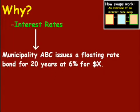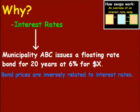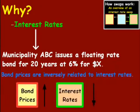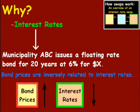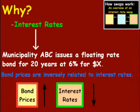They're going to issue a floating rate bond for 20 years at 6%, for X dollars — it could be $100 million or $10 million. If you'll remember, bond prices are inversely related to interest rates. That means if bond prices rise, interest rates fall, and if bond prices fall, interest rates rise. So if Muni ABC wants to issue a bond, they're going to prefer to have the lowest possible interest rate, all things being equal, so they can get a higher bond price or more cash flow coming to them.